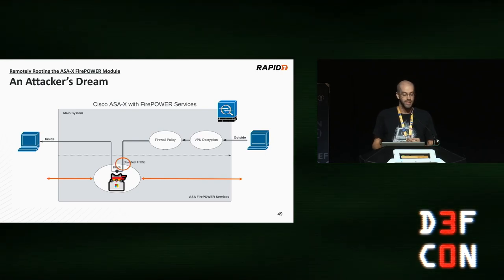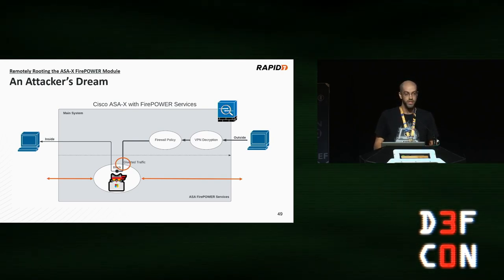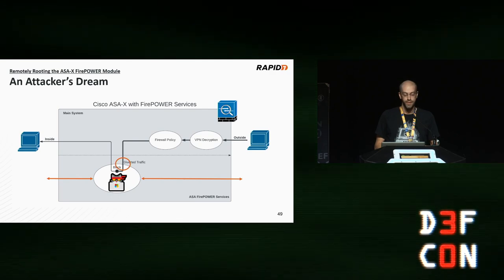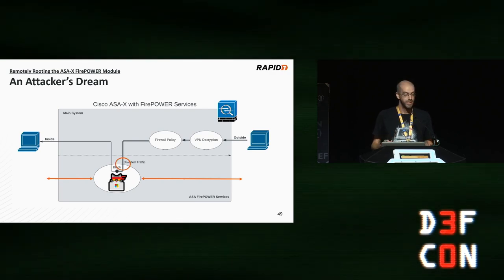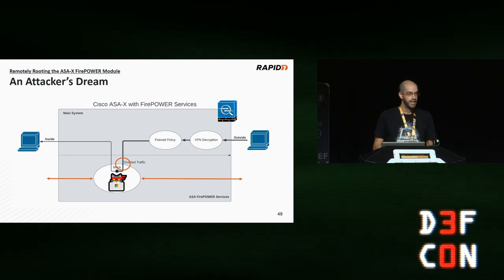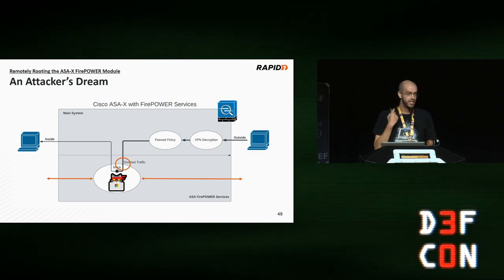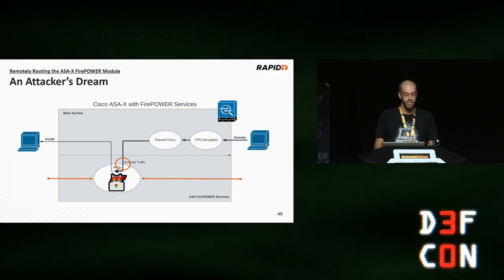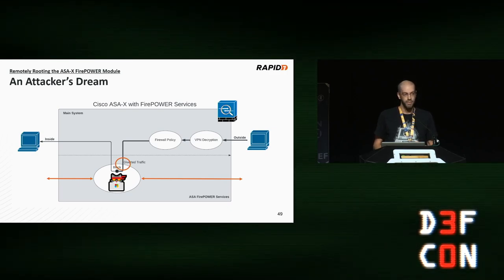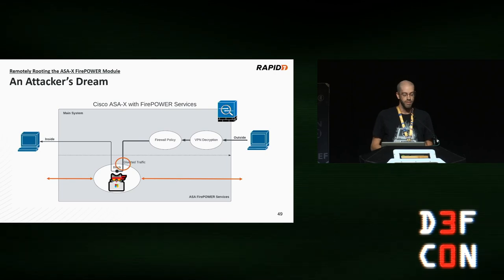This is particularly noteworthy because this virtual machine, when configured, has network access — it can communicate with the inside network the ASA is protecting and with the outside network or internet. An attacker with a root shell on this VM can install arbitrary software, persist through reboots and upgrades, pivot attacks inward, exfiltrate data out, and perhaps most interestingly, just sit and sniff the traffic flowing through. It's unlikely anyone is monitoring this VM for malicious behavior — it's a very attractive place for an attacker to land and hide. This type of root shell is something most vendors attempt to prevent, but here it's actually a feature.